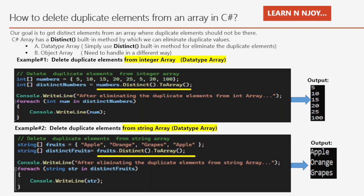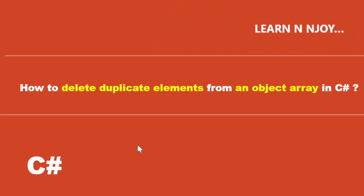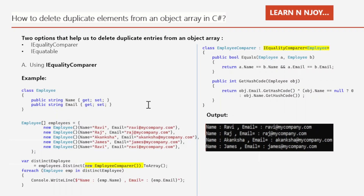Now we are going to focus on how to delete duplicate elements from an object array in C-Sharp. We have two options that help us delete duplicate entries from an object array. Option one is implementation of the IEqualityComparer interface. Option two is the IEquatable interface implementation. Let's see first using IEqualityComparer.